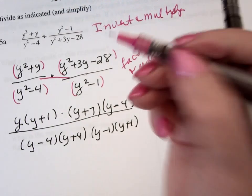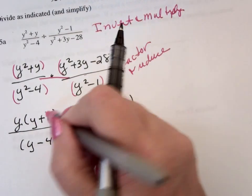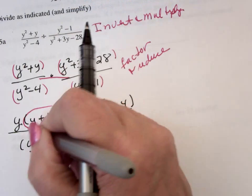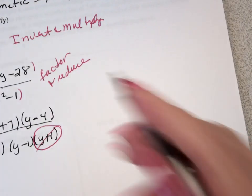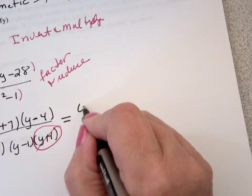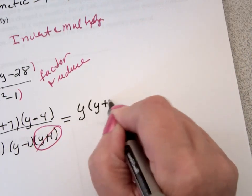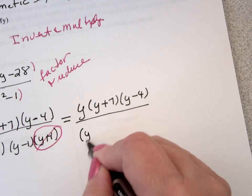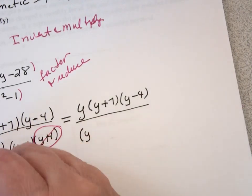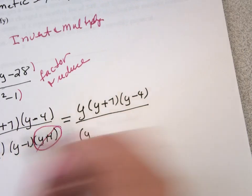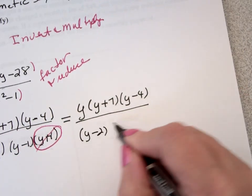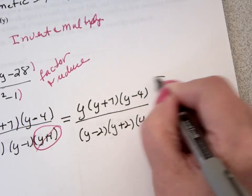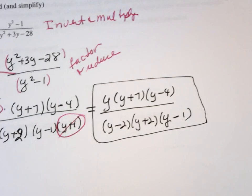And now what I look to do is to match, and what do I have? I have a y plus 1 and a y plus 1, and by the way, those are the only things that are going to go. So my final answer ends up being y times y plus 7, y minus 4 over y minus 2, y plus 2, y minus 1. And then nothing you can do about that, that's all she wrote.